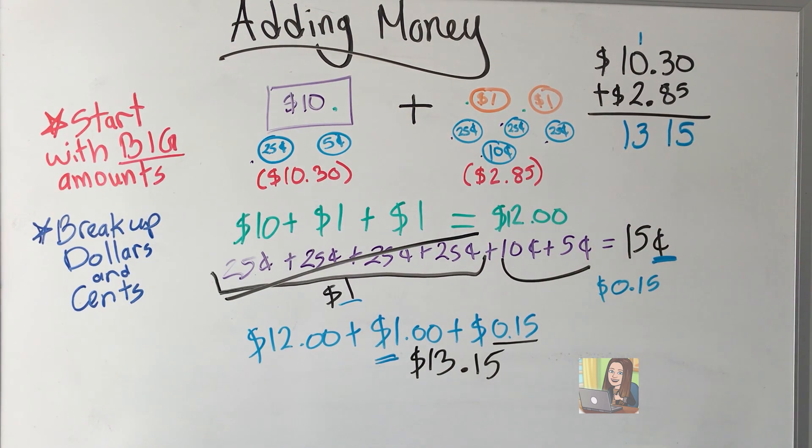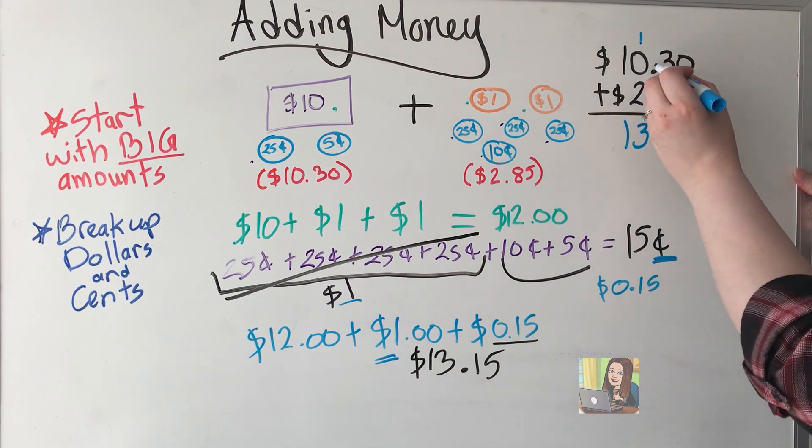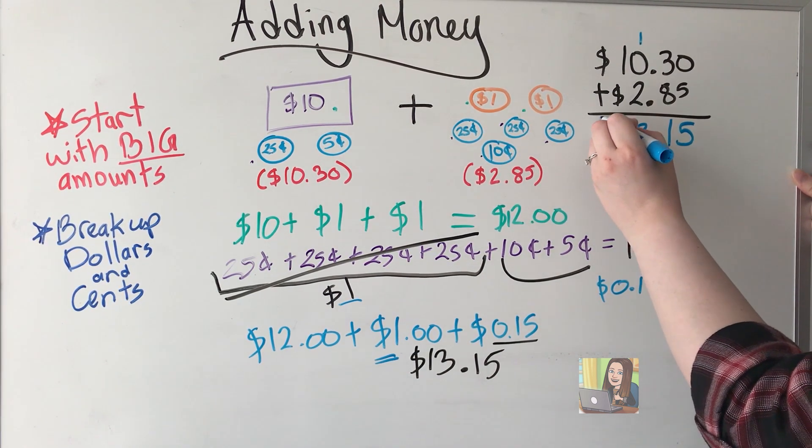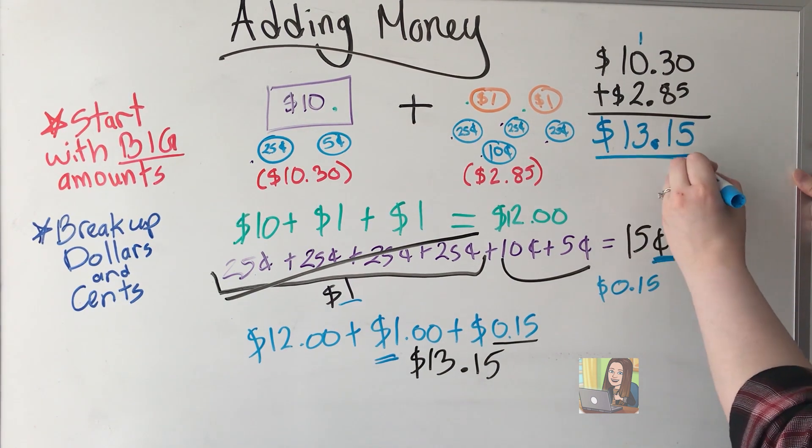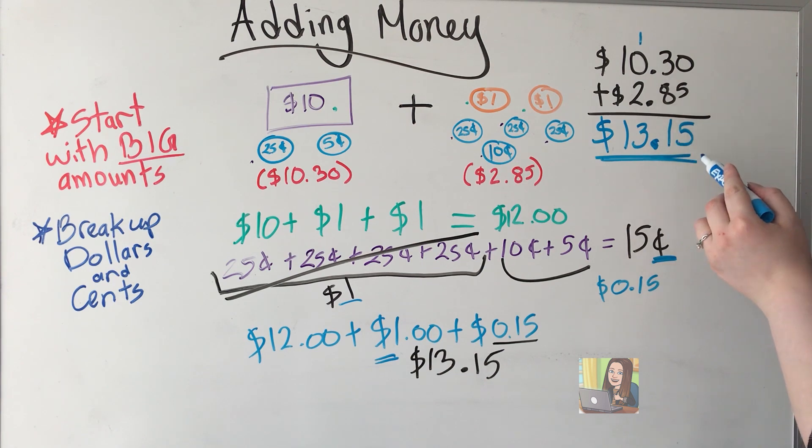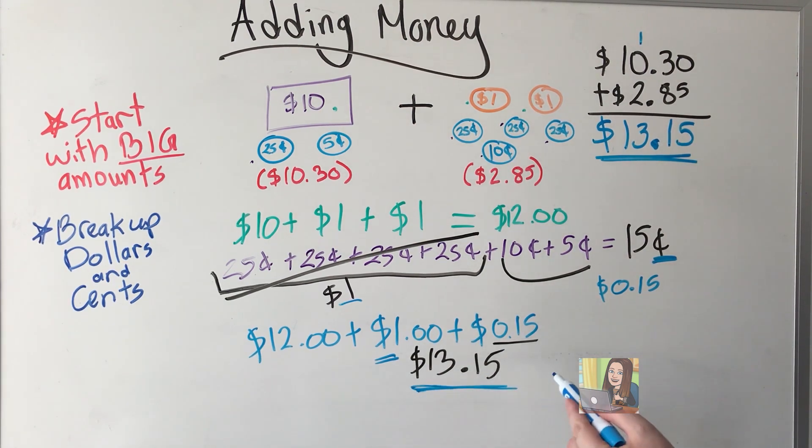I am not finished, though. I forgot two things. What are those two things? The first, you may have noticed, I forgot the decimal place. The next thing I need to finish my answer is the unit. Now, I have double checked my work because $13.15 matches what I got down here.